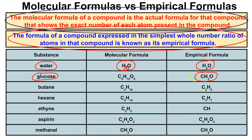Let's take a look at butane. Butane's molecular formula is C4H10. If we factor out a two from each one of these subscripts, we will get the empirical formula C2H5.